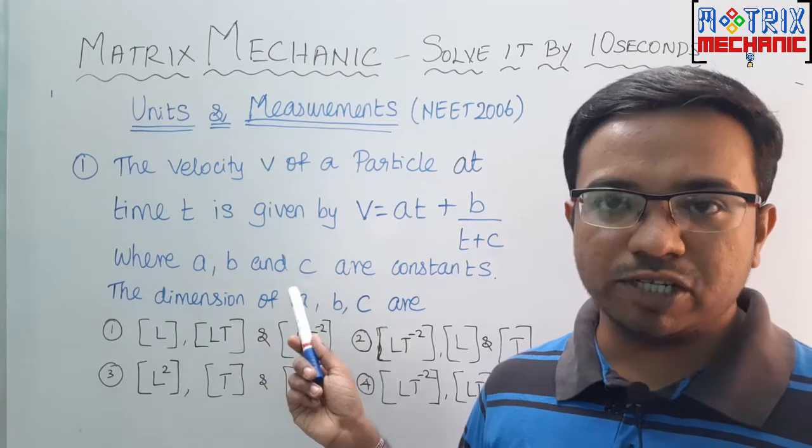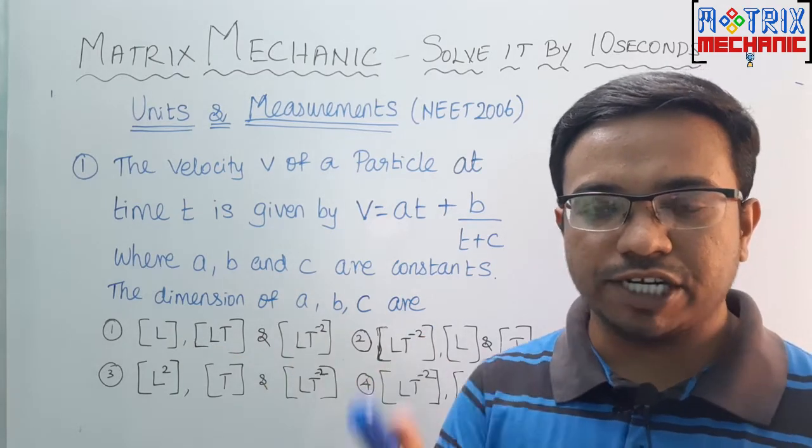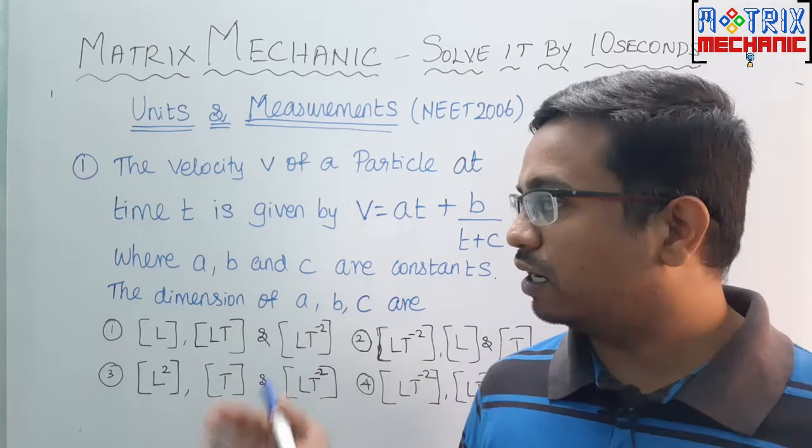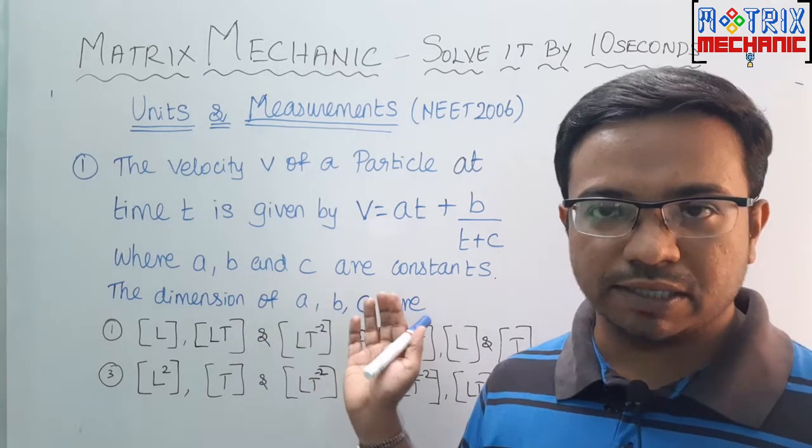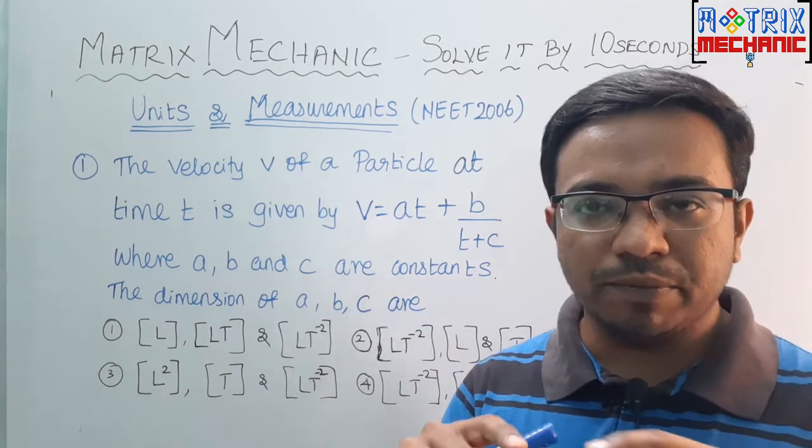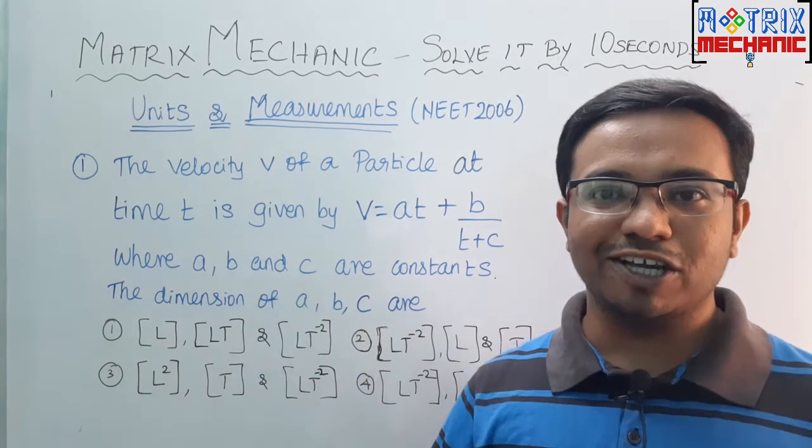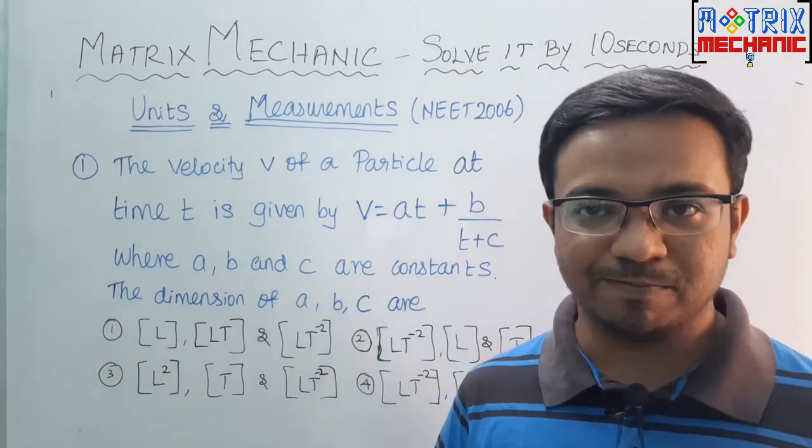Now we want to find the dimension of a, b, c. How generally you will find the dimension of a, b, c is you will take a dimensional formula on both sides, balance it, and make an equation. By doing such calculation, you will predict your answer.